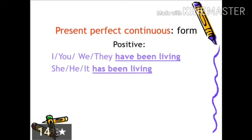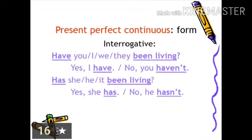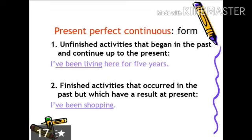Forms of present perfect continuous tense: positive structure — subject plus have/has been plus -ing form of the verb. Negative form structure — subject plus haven't/hasn't been plus -ing form of the verb. Interrogative form structure — have/has plus subject plus been plus -ing form of the verb plus question mark. It is used to express unfinished activities that began in the past and continue up to the present, for example, I have been living here for five years. Also finished activity with a result at present, for example, I have been shopping.